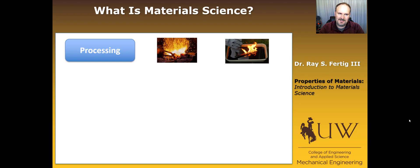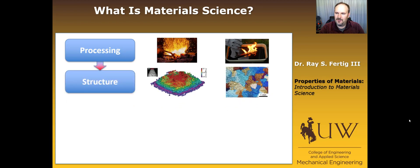Material science is fundamentally interested in the processing of materials, specifically for what the processing does to the structure. So if I do a heating and quenching of a metal, for example, what happens to the structure and why?